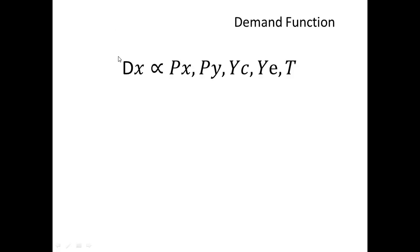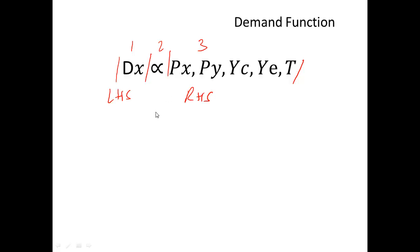The demand function has three parts: part one, part two, and part three. Part one is the quantity, generally called the left-hand side, and the right-hand side is the other component. This represents the relationship between the left-hand side and the right-hand side of the function.